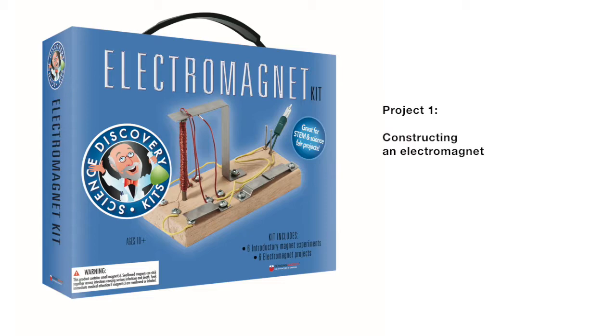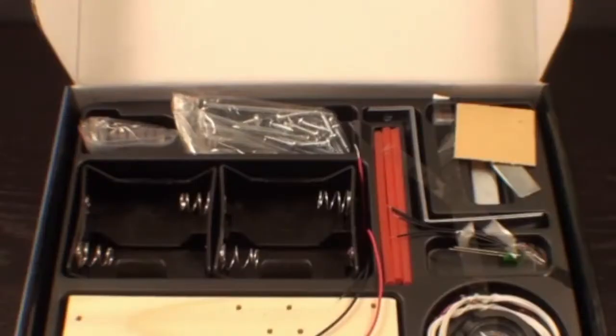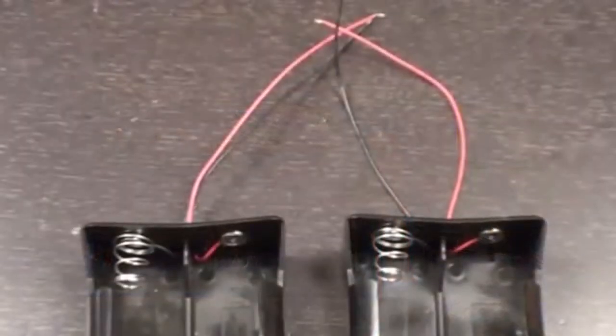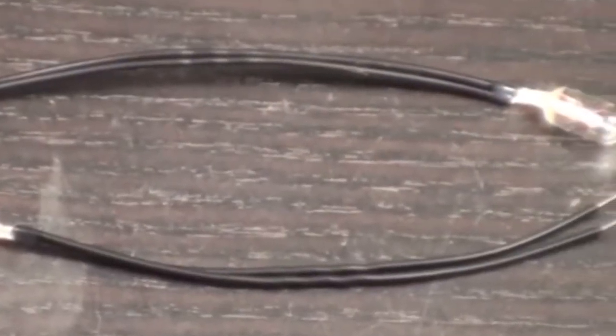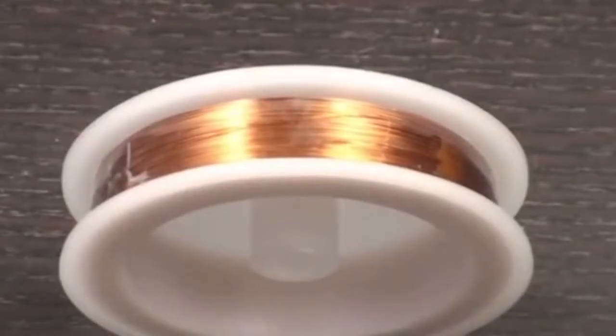Today we will be constructing an electromagnet. To construct you will need two battery holders, a compass, a light bulb with leads, and magnetic wire.